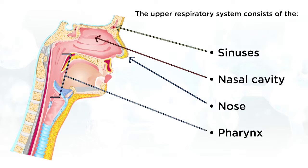What these structures help to do is filter, warm, and humidify incoming air. This helps to protect the more delicate surfaces of the lower respiratory system. The upper respiratory system also helps to reabsorb heat as well as water from the air that is expelled from our lungs.